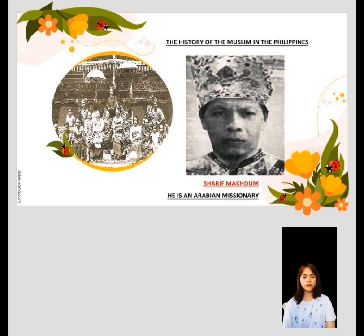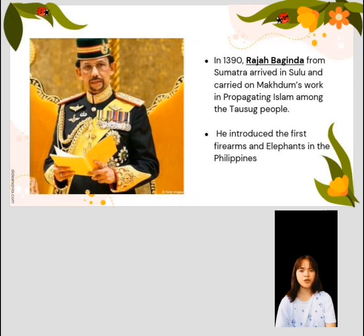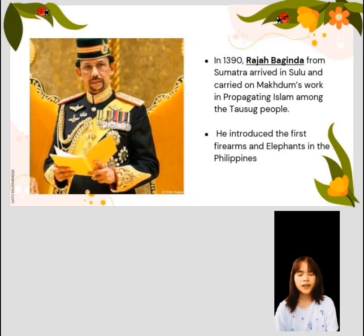Sheriff Maktum was an Arabian missionary through whom Islam became known in the Philippines in the 14th century. He had the first masjid or mosque in the Philippines built in Tubig-Indangan, Simunul Island, Tawi-Tawi province. In 1390, Raja Baginda from Sumatra arrived in Sulu and carried on Maktum's work in propagating Islam among the Tausug people. He introduced the first firearms and elephants in the Philippines. Maktum died in Simunul Island, Tawi-Tawi, and his tomb is still visited by tourists today.